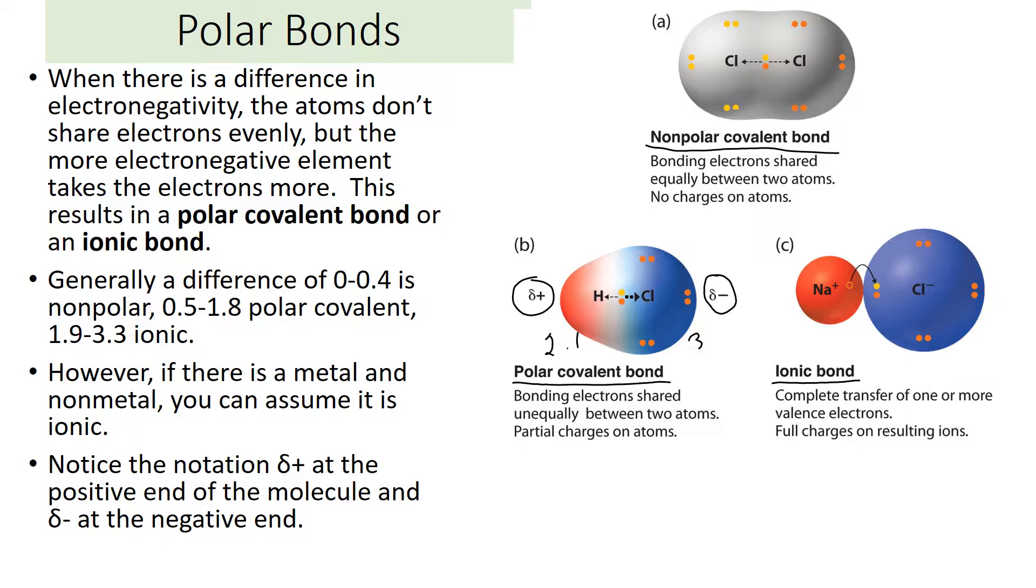So how do you tell the difference? Generally, if it's zero to 0.4 difference, so they're exactly the same or pretty close, we consider it a nonpolar bond. If it's more than that, 0.5 to 1.8, it's considered a polar covalent bond. And if it's really great, 1.9 and higher, we call it ionic.